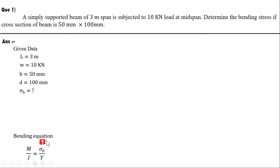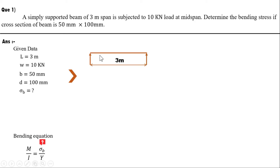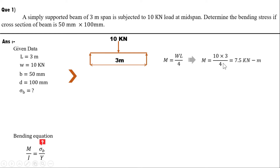For the maximum bending moment, the simply supported beam has a span of 3 meters with a central point load of 10 kN. Using M = WL/4, with W = 10 and L = 3, we get M = 7.5 kN·m.